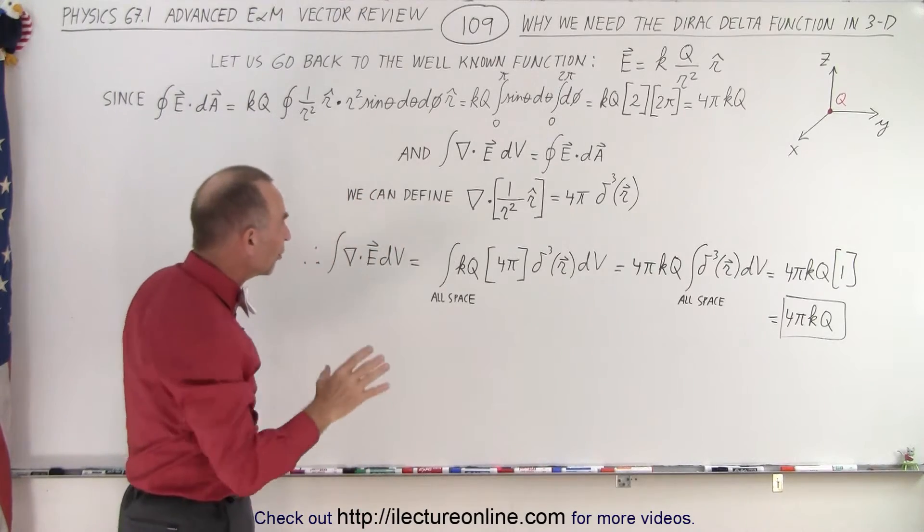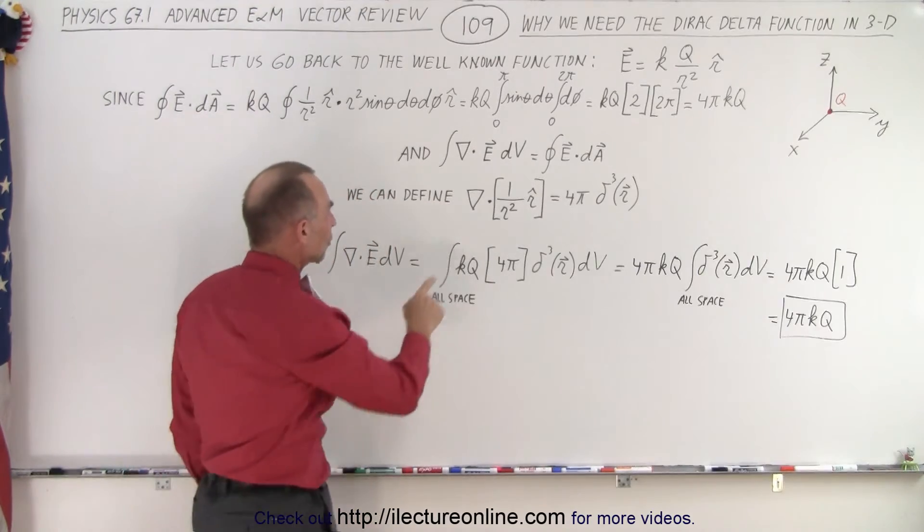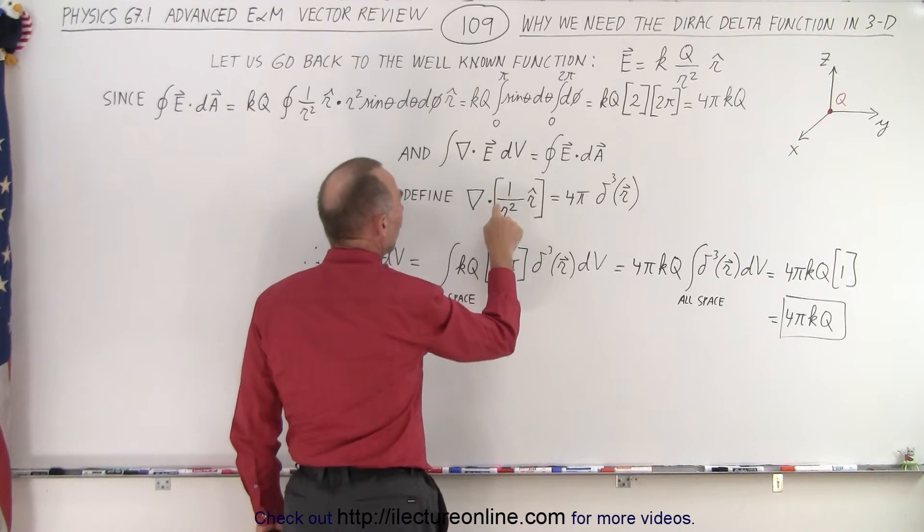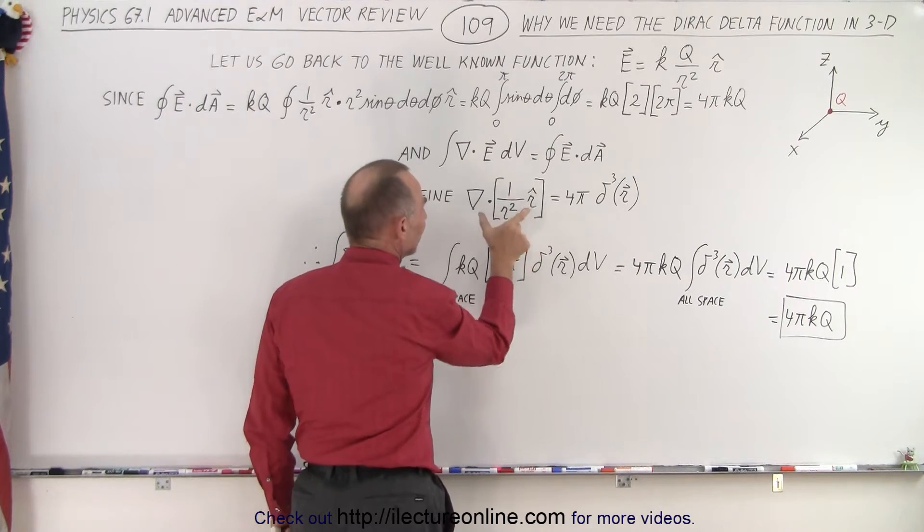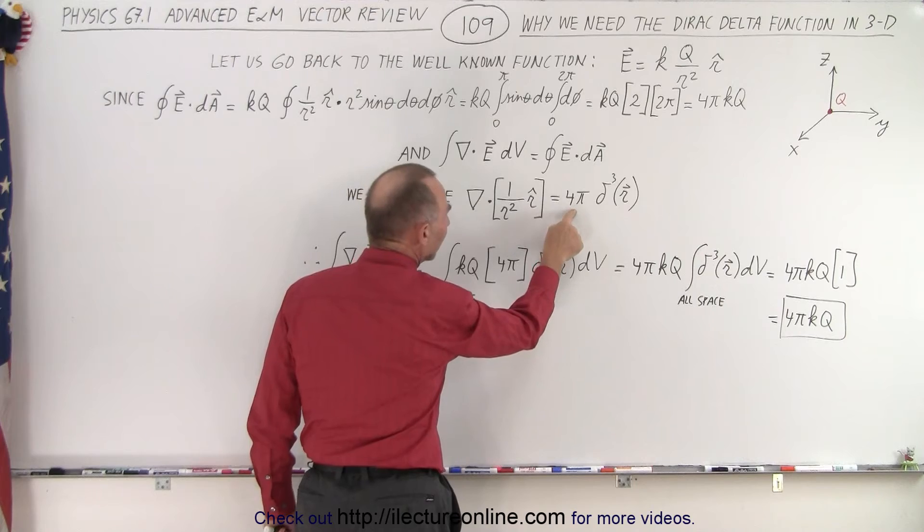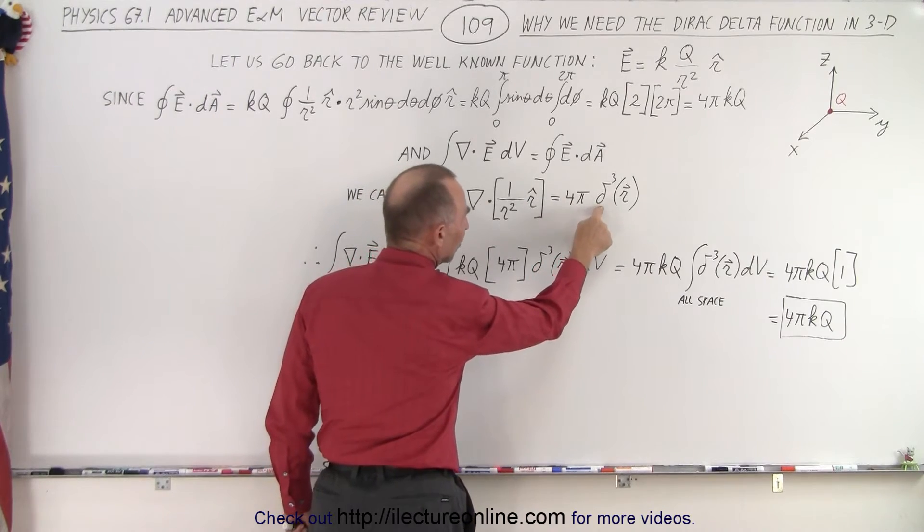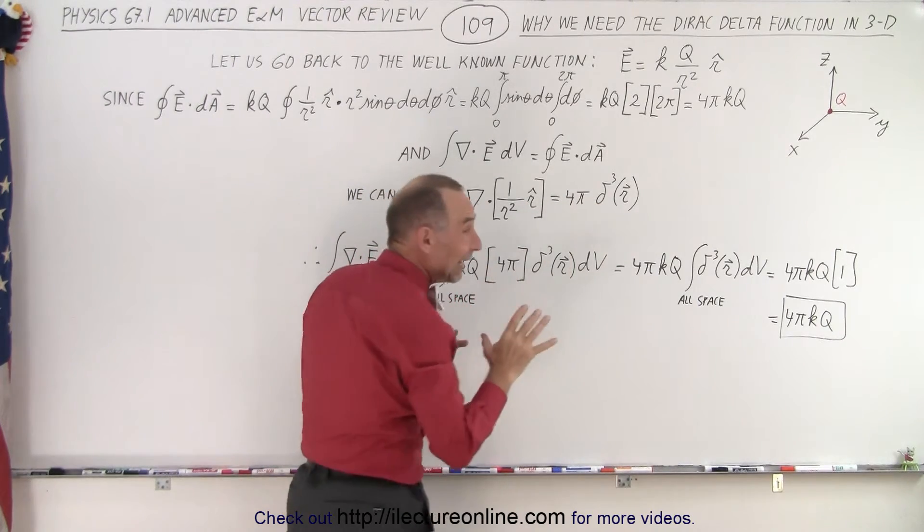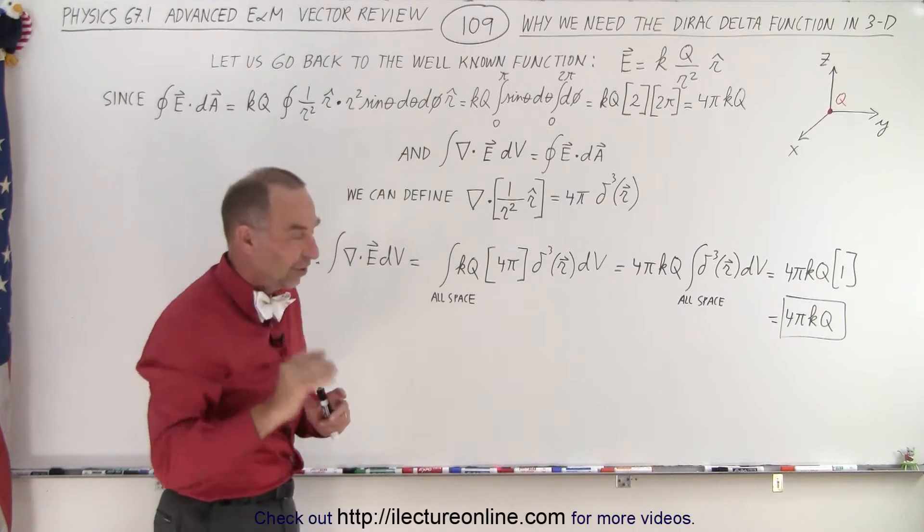But then if we define the following: if we take the gradient of 1 over r squared in the r direction and define it as 4π times the Dirac delta function in three dimensions, then everything comes out just perfect and see why.